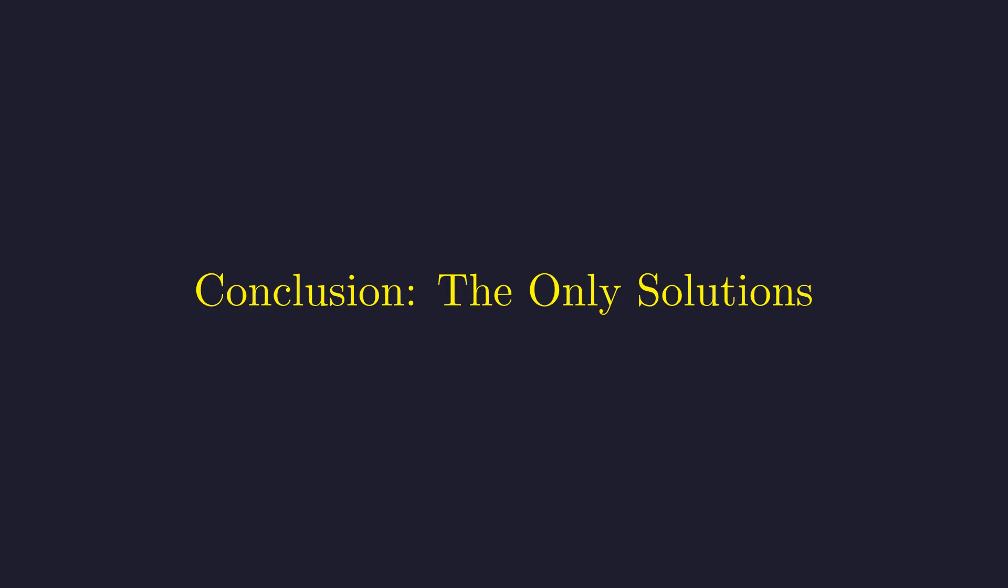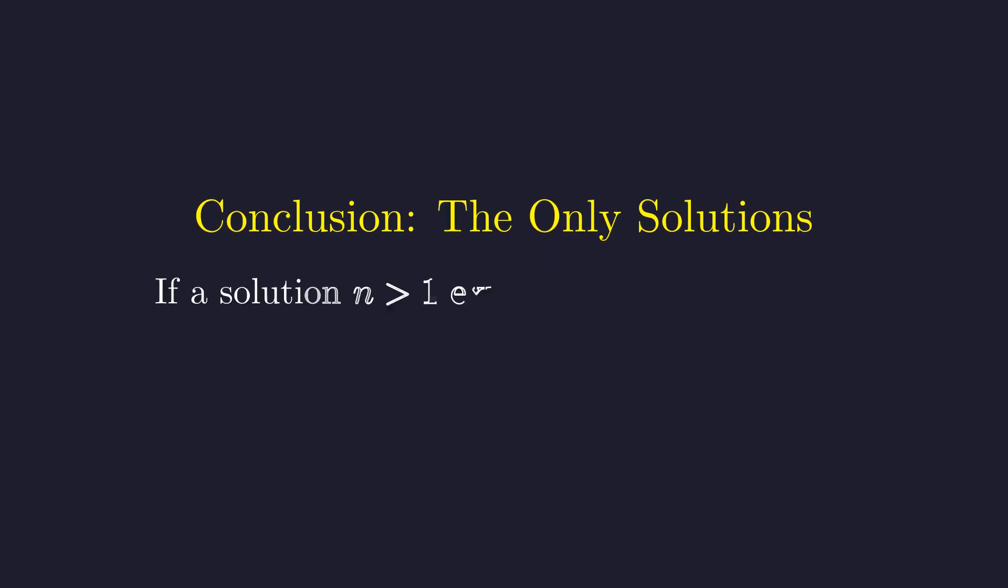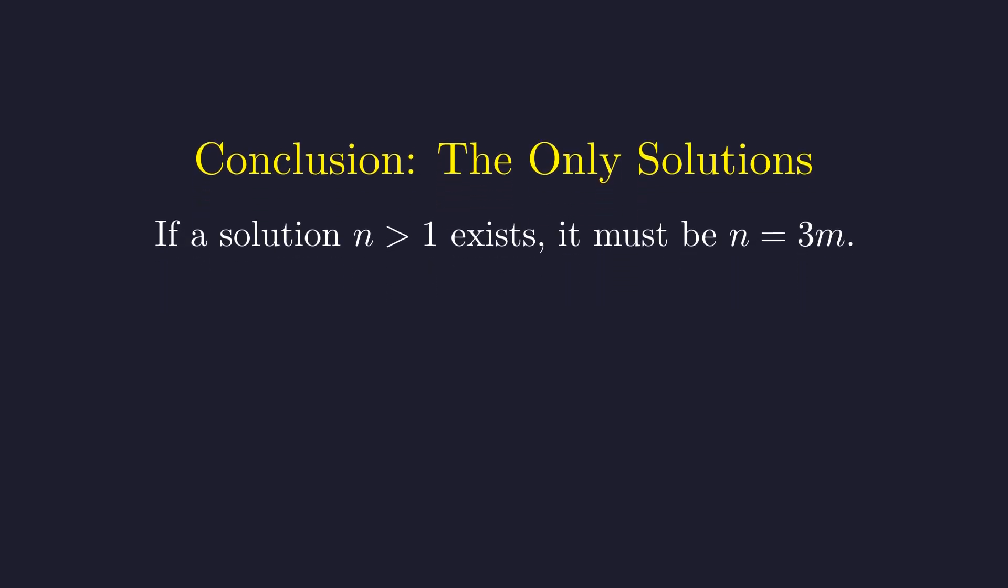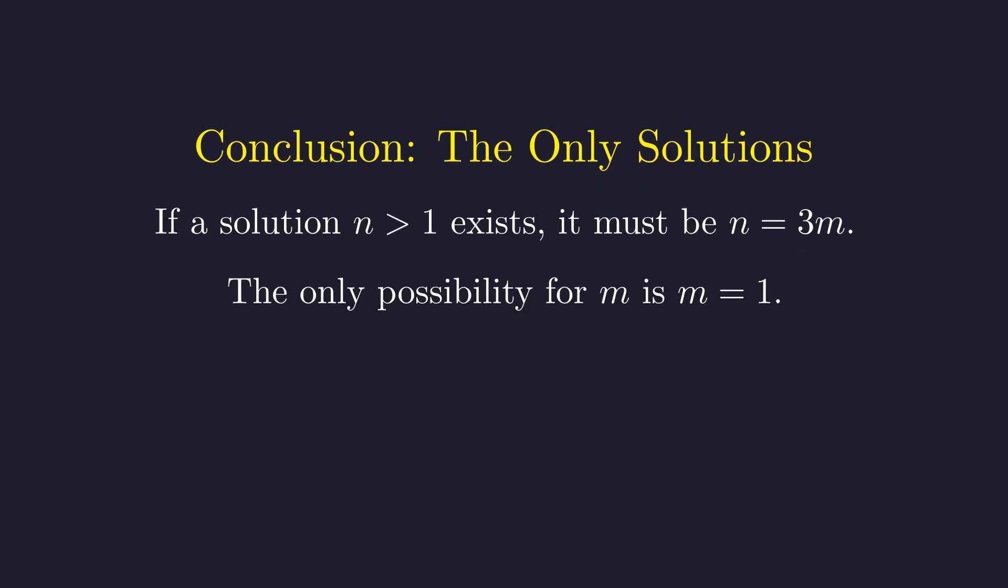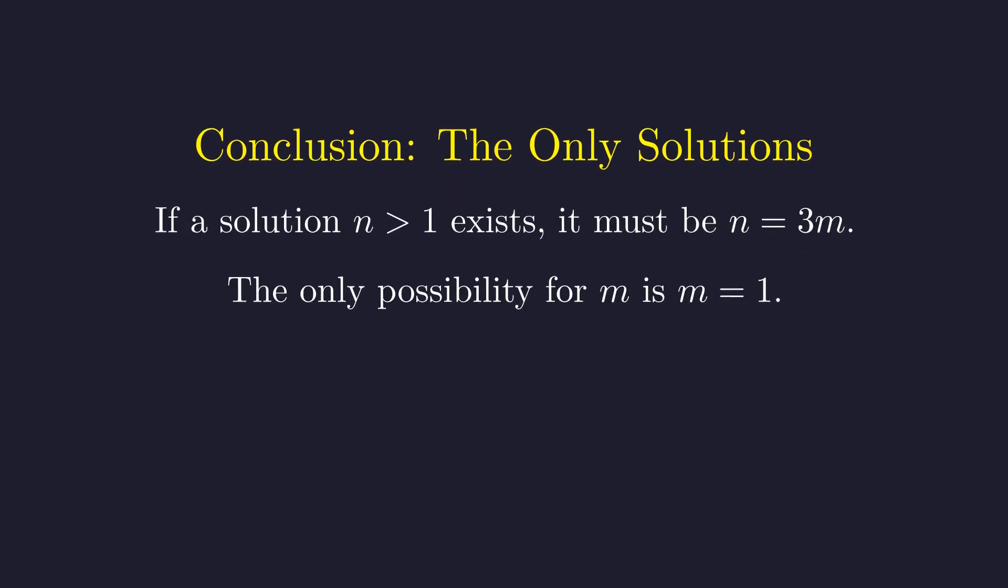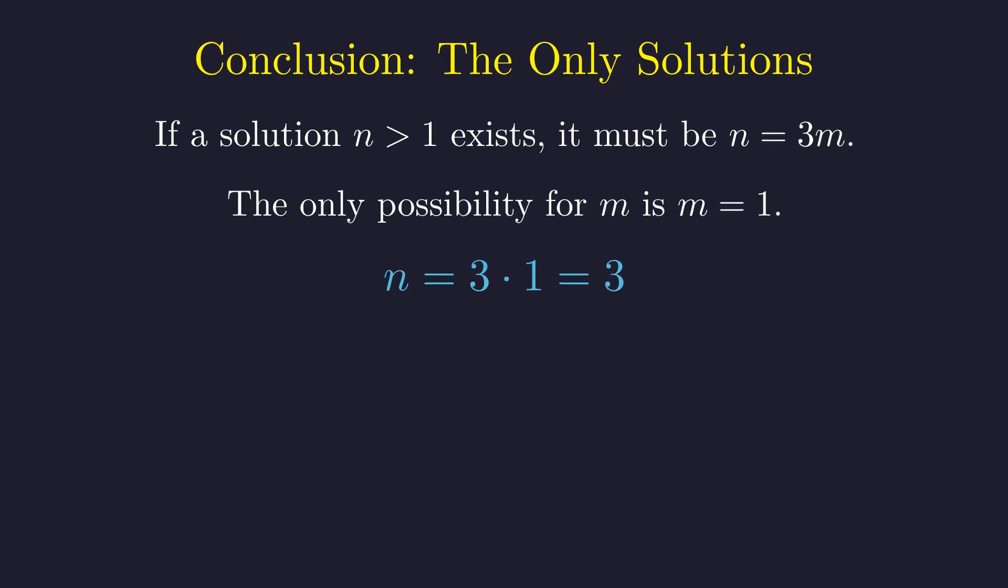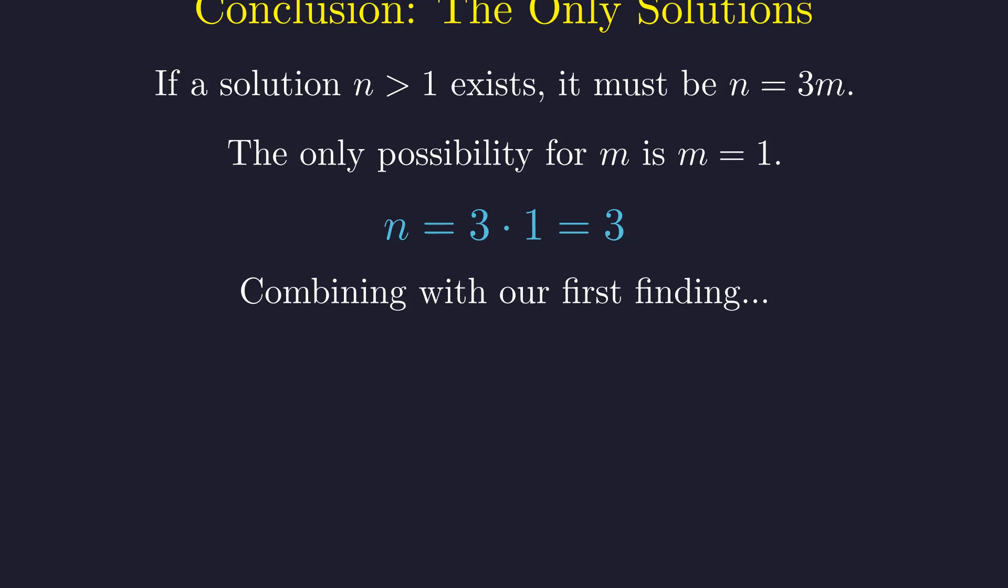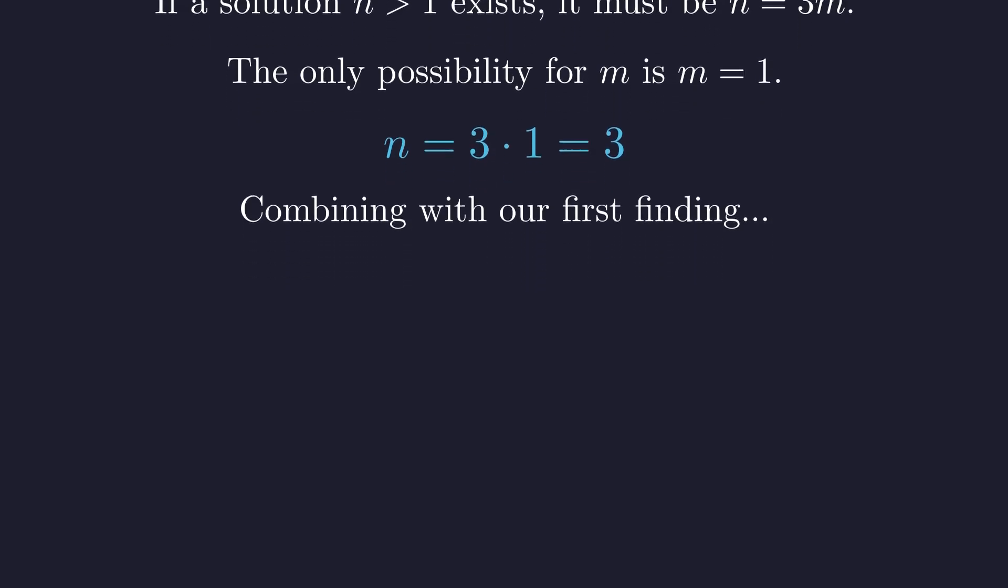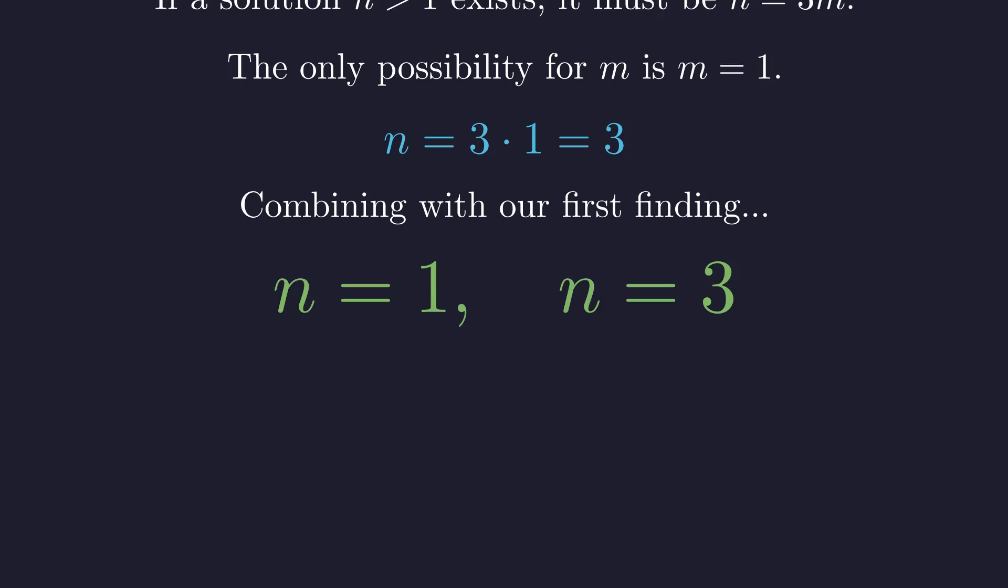Let's assemble our findings into a final, undeniable conclusion. We proved that any solution greater than 1 must take the form n equals 3m, with m not divisible by 3. Then we proved through contradiction that m must be 1. This gives us the solution n equals 3. Combining this with the solution n equals 1 that we found at the very beginning, we are left with just two integer solutions: 1 and 3.